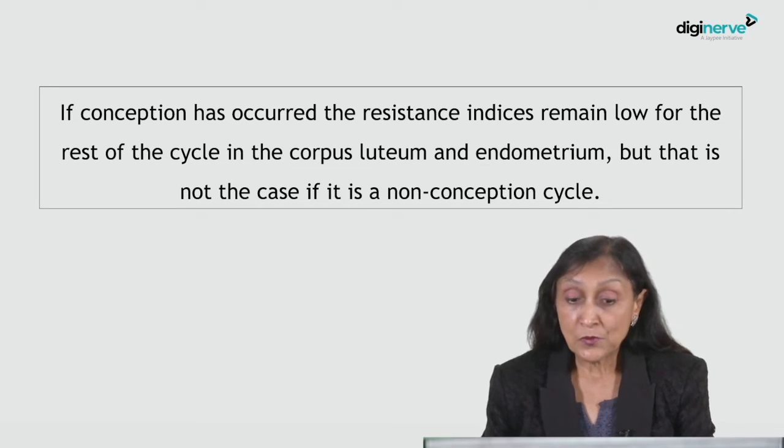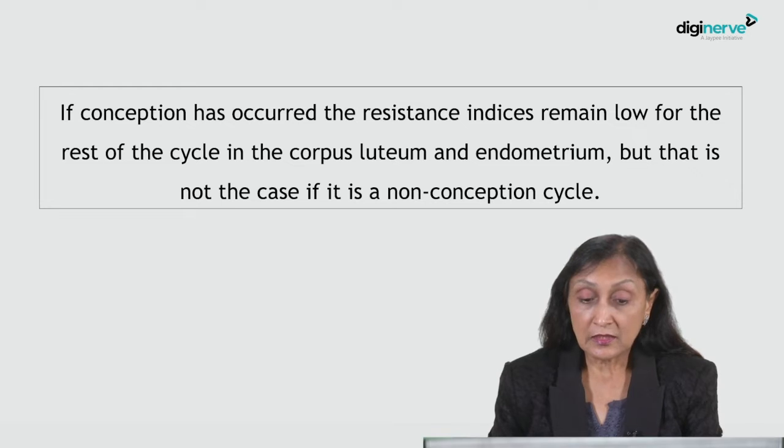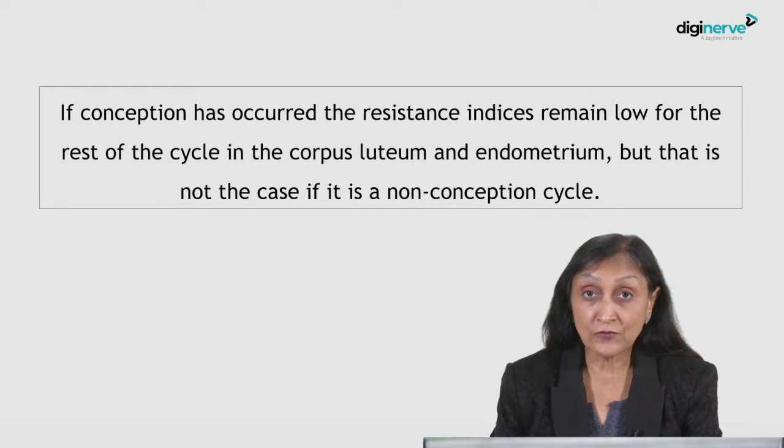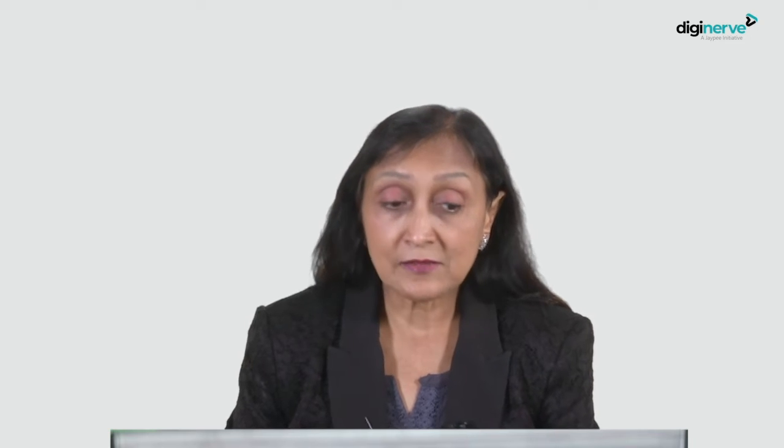If conception has occurred, the resistance indices remain low for the rest of the cycle. But if it is a non-conception cycle, the resistance index in the corpus luteum as well as in the endometrium starts increasing after the midluteal phase.